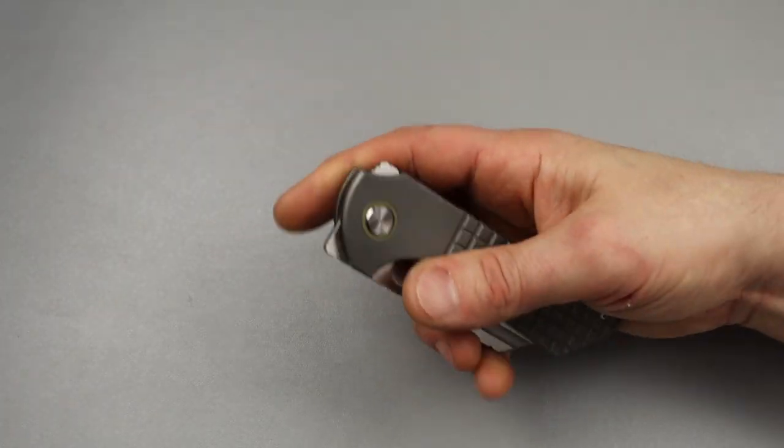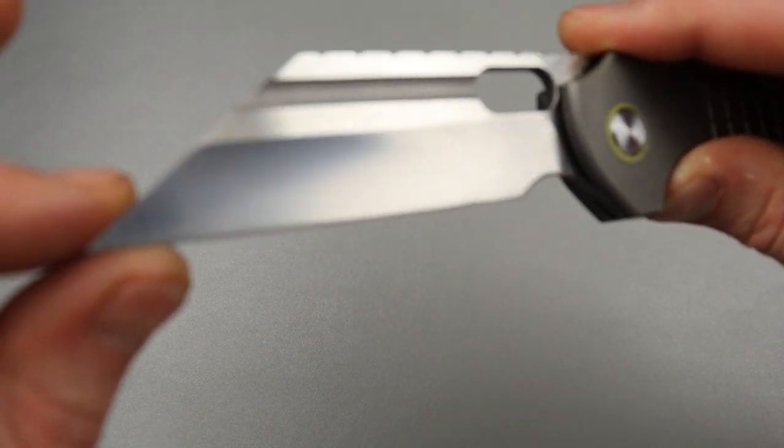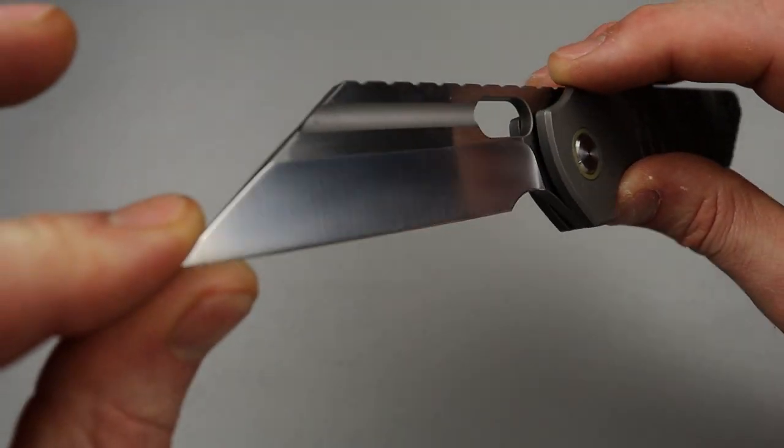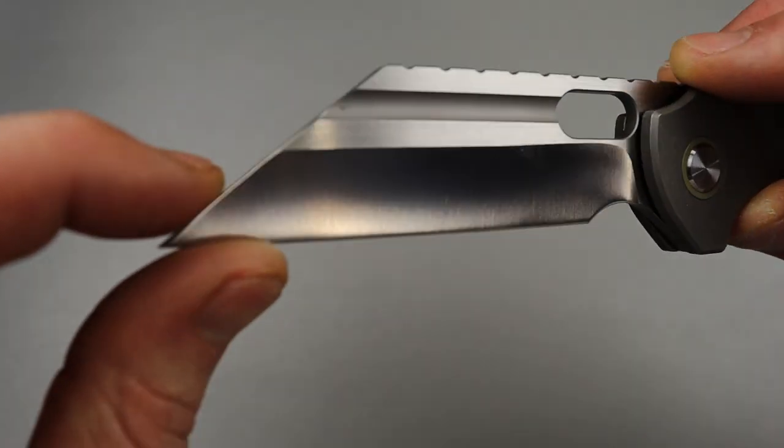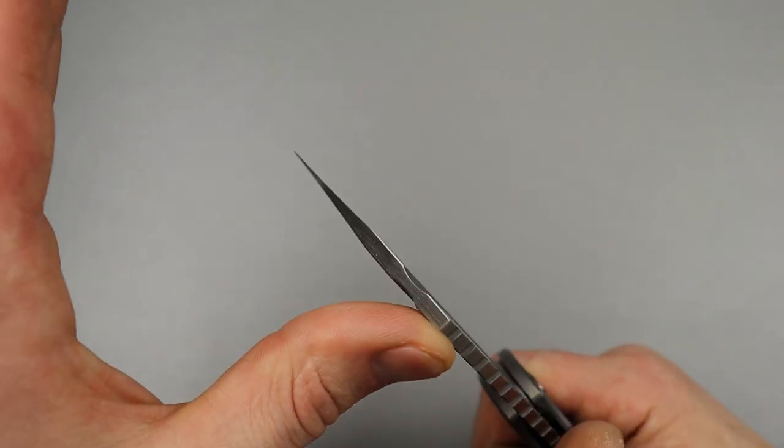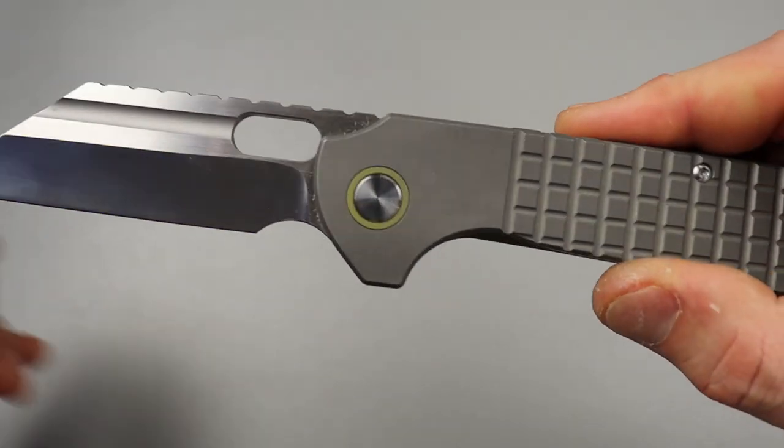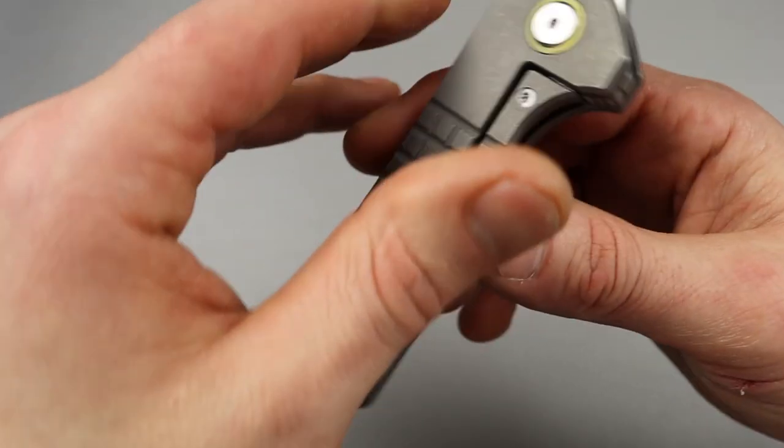Now, we have a beautiful satin hollow ground wharncliffe blade. We have a hand satin on the flats and then a belt satin on the hollow. Nice and thin behind the edge. Titanium frag pattern frame lock.